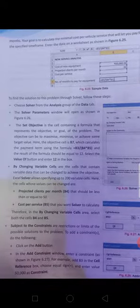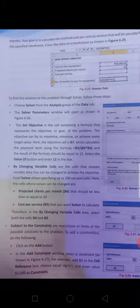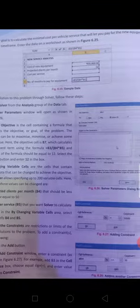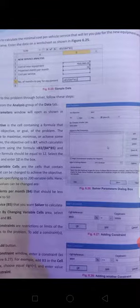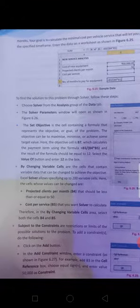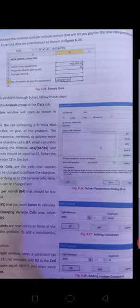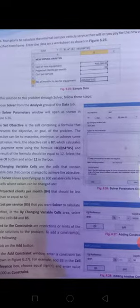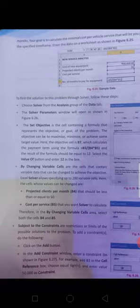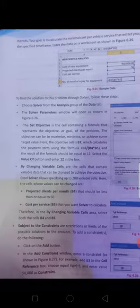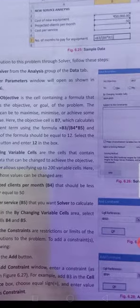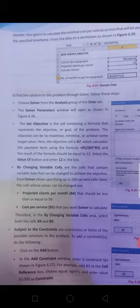Now to find the solution to this problem, choose solver from the analysis group of data tab. After that the solver parameter window opens as shown in 6.26. This is our solver parameter. The set objective is the cell containing a formula. The set objective, in this we will set a formula. By changing variable cell, in this we will change the variables of cell. Like we have 50, so we can change our data according to our wish.